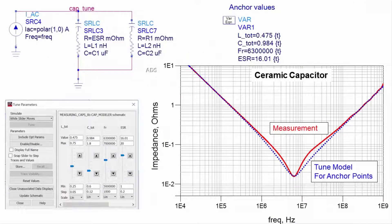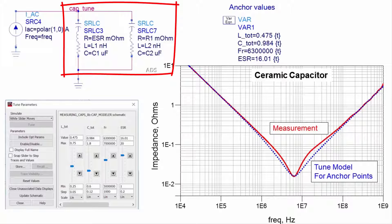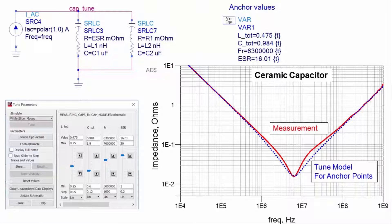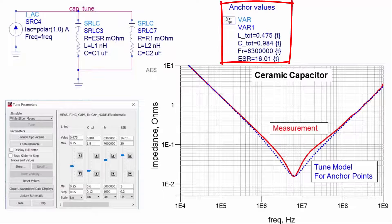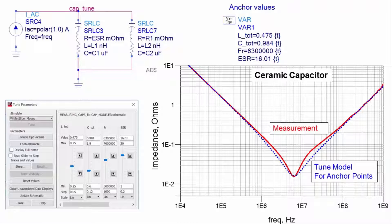While a single RLC ceramic capacitor model is low fidelity, two parallel RLC elements are generally sufficient for an accurate, high-quality ceramic capacitor model. Four anchor values obtained from the measurement align the low frequency capacitance, high frequency inductance, series resonant frequency, and series resonant ESR.